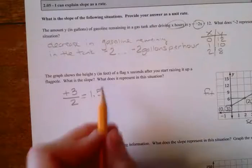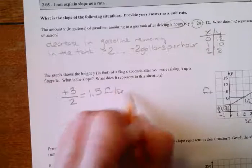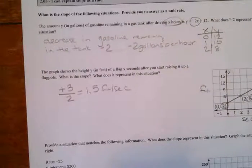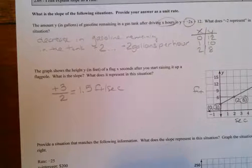So that's 1.5. Okay, so the slope is 1.5 and it's feet per second. What does it represent in the situation? It represents the speed at which you are raising the flag on the pole at a rate of 1.5 feet per second.